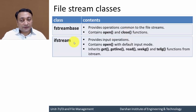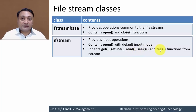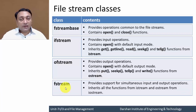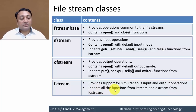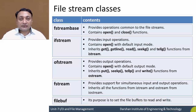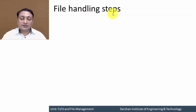The class fstream_base provides operations common to file streams like open and close functions. ifstream provides input operations, contains open with default input mode, and inherits get, getline, read, seekg, and tellg from the istream class. ofstream provides output operations, contains open with default output mode, and inherits put, seekp, tellp, and write functions from ostream. The fstream class provides support for simultaneous input and output operations and inherits all functions from ifstream and ofstream. filebuf sets the file buffers to read and write.